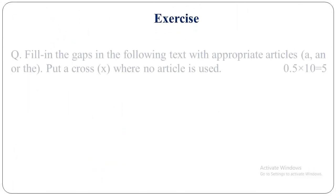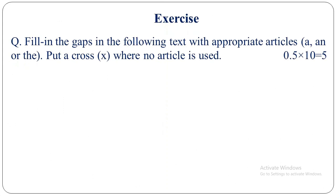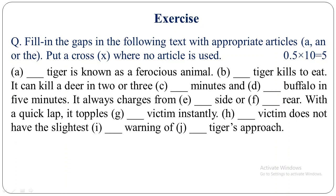Let's have an exercise: fill in the gaps in the following text with appropriate articles — a, an, or the — and put a cross where no article is used. 'Dash tiger is known as a ferocious animal. Dash tiger kills to eat. It can kill a deer in two or three minutes, and dash buffalo in five minutes. It always charges from dash site or dash rear. With a quick leap it topples dash victim instantly. Dash victim does not have the slightest dash warning of dash tiger's approach.' There are 10 gaps to fill.